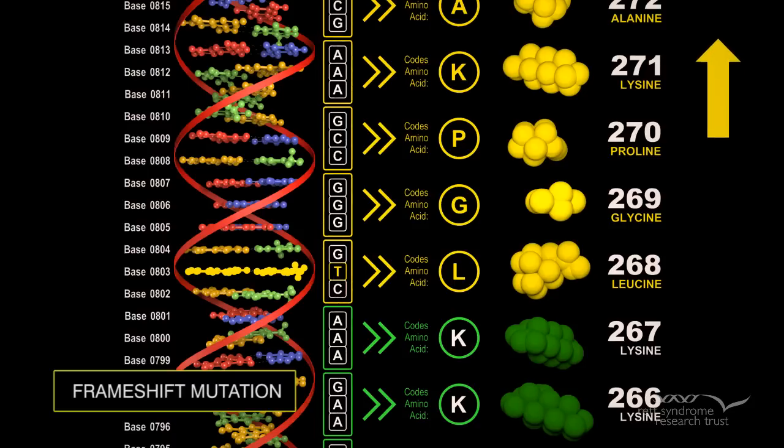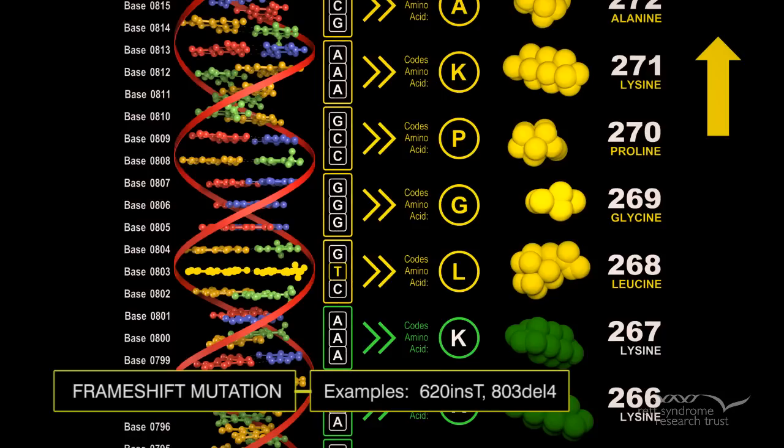As in the case of nonsense mutations, parts of the protein that are downstream of a frameshift mutation are rendered non-functional. Insertions, deletions, and duplications can all be frameshift mutations.